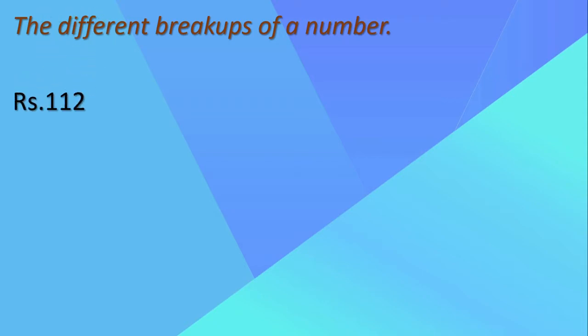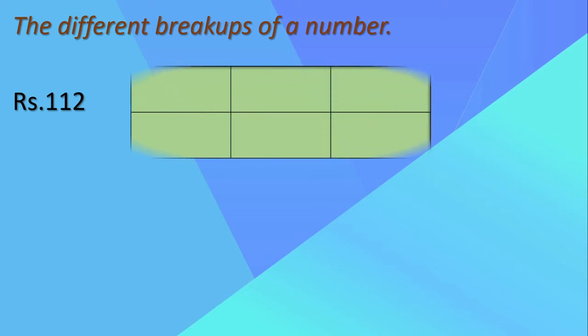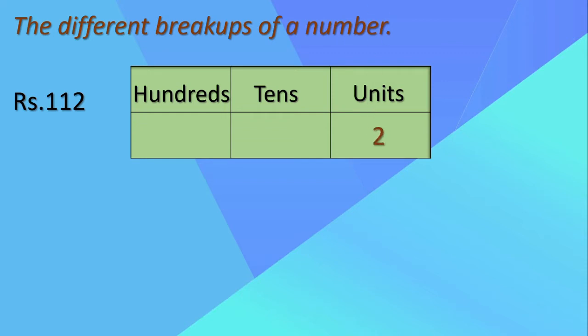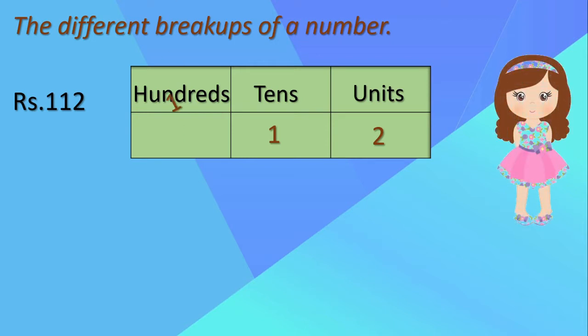This is rupees 112, which is needed for the picnic. When we write this according to the place value, we know that this is the units place, tens place, and hundreds place. When we write 112 in this table: 2 will be in the units place, 1 in the tens place, and 1 in the hundreds place.